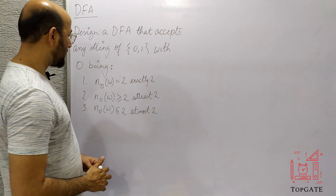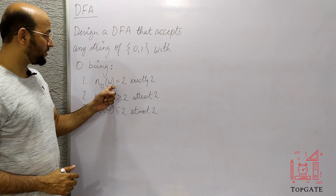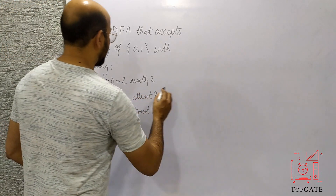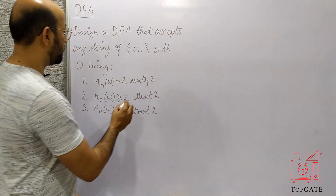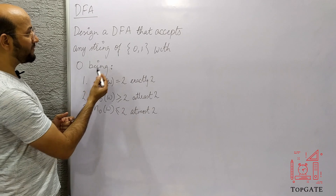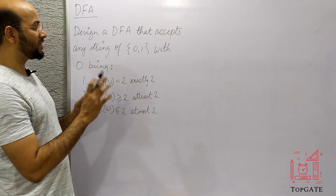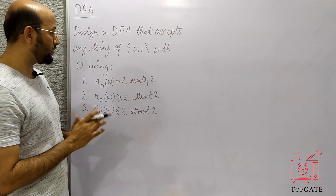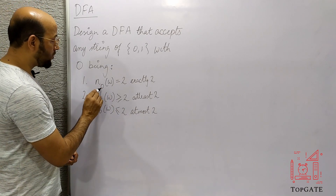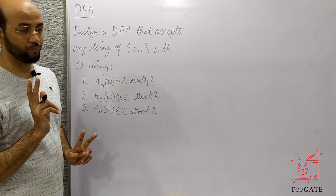Let us start with the first one — the number of zeros in a string is exactly 2. In sigma we have 0 and 1, so all strings will be made up of 0s and 1s only. It is saying that the number of 0s in the string should be exactly 2.